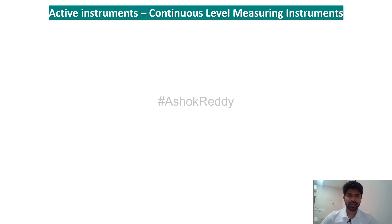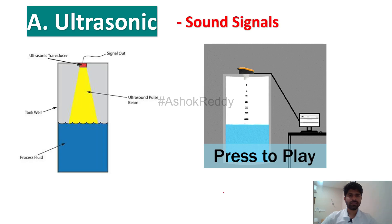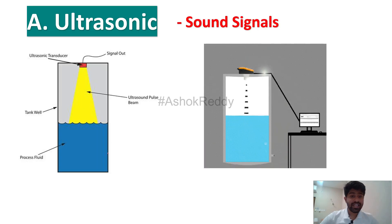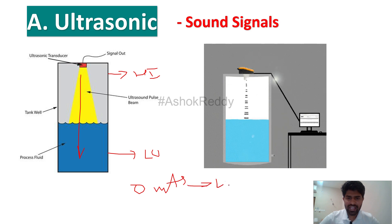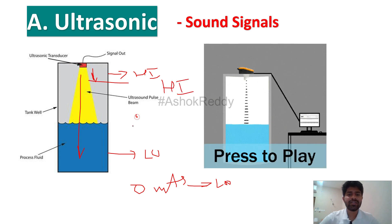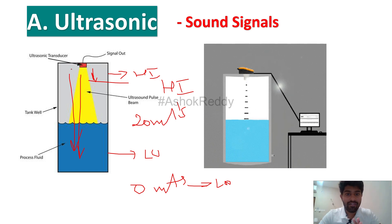Next we will see the continuous level measurement. We have two types: one is ultrasonic and another one is radar. In ultrasonic we use sound signals, and in radar we use microwave signals. For ultrasonic: if the sound signals travel up to the low level, it will send 4 milliamps to the PLC. If the wave signals only reach up to the high level, it will send 20 milliamps to the PLC. It calculates the distance by the time with which the sound signals are traveling.